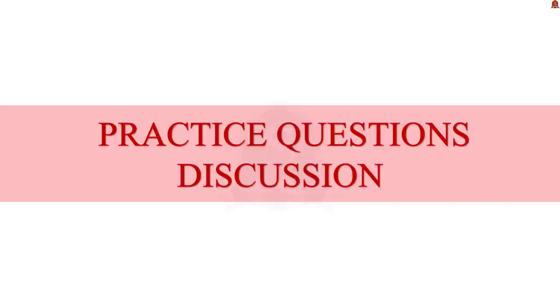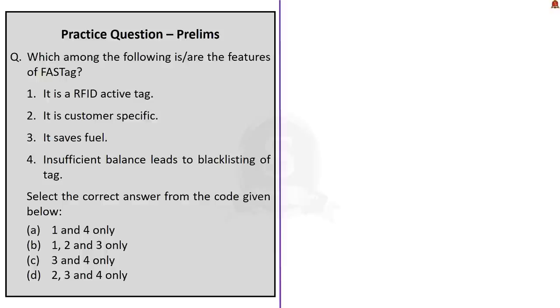Now we have come to the last session, the practice questions discussion session. Let us start with this first question. It is about FASTag. The question asks, which among the following is or are the features of FASTag? First option, it is RFID active tag. This statement is incorrect because during discussion we clearly saw that it is a RFID passive tag and we also saw the reason behind it. So one should not be in the answer. We can eliminate options A and B.